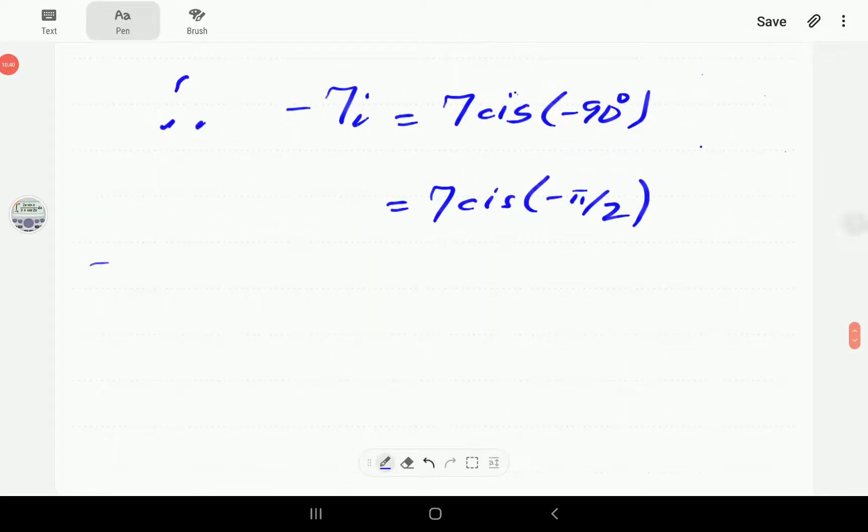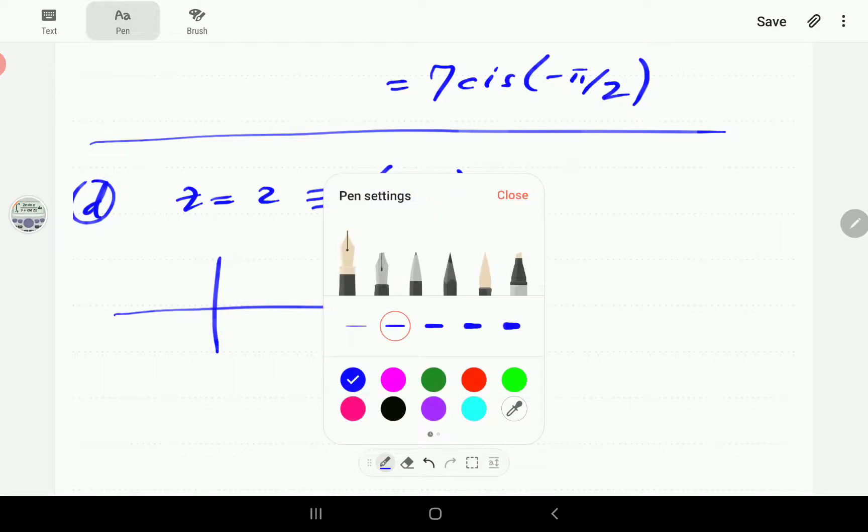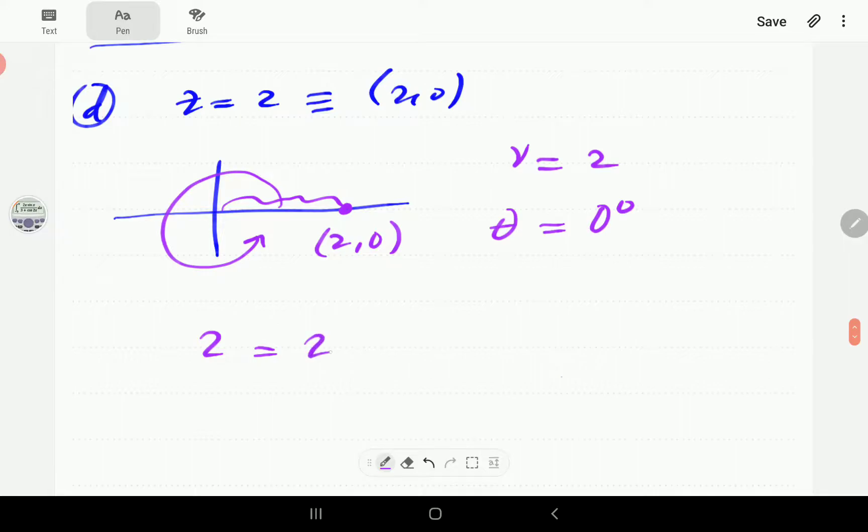In D, we have got Z equal to 2. So, this is 2, 0. Again, we've got a complex number along the coordinate axis. That means we can do this by inspection. R is this distance, which is 2. And, theta is the angle, which is 0 degrees. Because, we always measure the angles from these axes. Right now, we are right there. So, 2 is going to be 2 cis of 0. It's 0 degrees and it's 0 in radians.